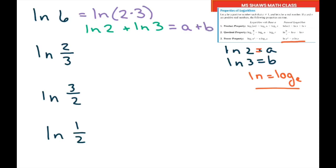Same thing for this one. I'm going to use my quotient property. So this is ln of 2 minus ln of 3, which is a minus b.